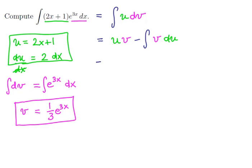So now let's just substitute in what we've got. u is equal to 2x plus 1. v is 1 third e to the 3x.